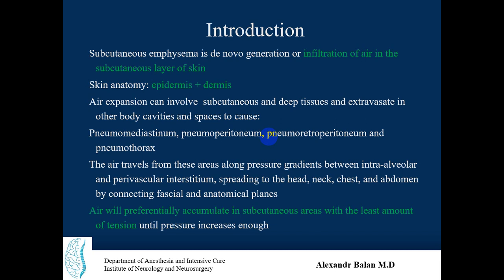Normally, air should not be outside the lungs. If it is situated in different cavities, spaces, or organs, it will create problems. Air travels from these areas along a pressure gradient — for example, if pressure in the lungs is high, it will go to subcutaneous areas. It can travel from intra-alveolar to perivascular interstitium, to the neck, head, chest, and abdomen by connecting fascial and anatomical planes, accumulating in areas with the least amount of tension.